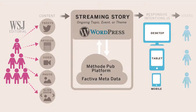Streaming Stories was the first WSJ product to use our responsiveintentions.js framework that allows the users to have a consistent experience in any browser or device that they're using on their desktops, tablets, or mobile phones. Responsiveintentions.js is now available on GitHub under the Dow Jones account.